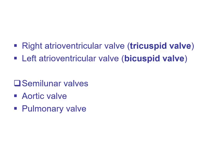The right atrioventricular valve is also called the tricuspid valve. The left atrioventricular valve is also called the bicuspid valve. The aortic and pulmonary valves together are also known as the semilunar valves. The tricuspid valve has three cusps, the bicuspid has two cusps, and the aortic and pulmonary semilunar valves have cusps that are shaped like a half moon — semilunar means half moon.